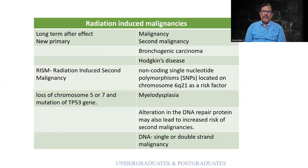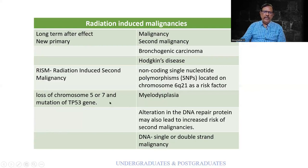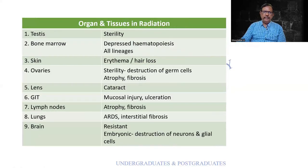Radiation-induced malignancies occur after long-term effects. There can be a primary malignancy as well as a second malignancy — not a secondary, but a radiation-induced second malignancy. This occurs because of chromosomal changes; loss of chromosome 5 or 7 can lead to myelodysplasia due to mutation of TP53. There is also alteration in DNA repair, giving rise to a chance of a second malignancy with breaks in single or double-strand DNA.